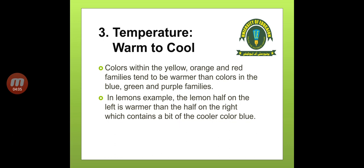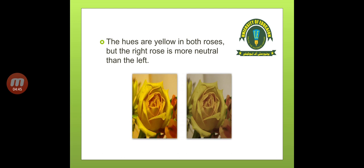Temperature — warm to cool. Colors within the yellow, orange, and red families tend to be warmer than colors in the blue, green, and purple families, which contain a bit of the cooler color blue. So on the right-hand side you will see a cooler color, while on the left-hand side you will see warm colors. Both are yellow, both depict the same subject, but one appears in warm colors and the other in cool colors.